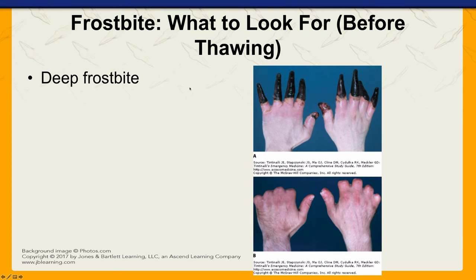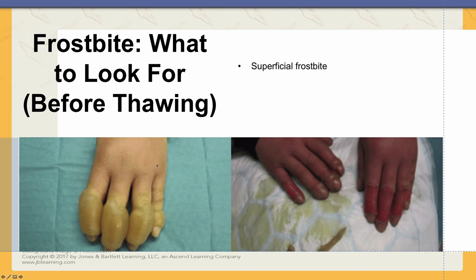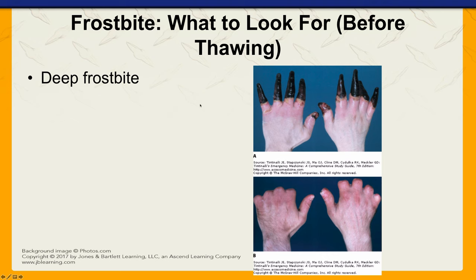For deep frostbite, much more tissue is involved. You will see discoloration — pale, even black, charred-looking, waxy skin. The parts feel cold, hard, and solid; you cannot depress them when you try to squeeze — they are essentially frozen. This can be very painful, but over time as the nerves become damaged, the person starts to lose sensation.